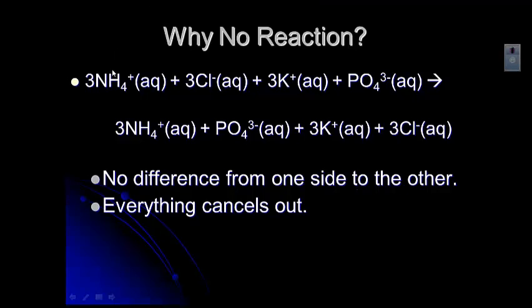Everything cancels out. You've got three ammonium ions on each side, three chloride ions on each side, three potassium ions on each side, and one phosphate ion on each side. So when you put things that stay dissolved in water together, if they don't form a precipitate, they're still just floating around in the same ionic state, and so there's not really any change that we can see.